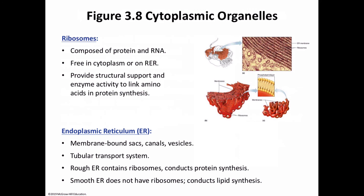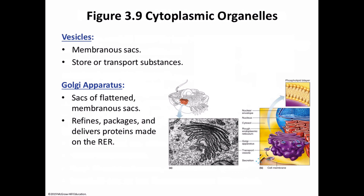The smooth endoplasmic reticulum is especially important and is quite abundant in the liver — this is what happens when you drink alcohol or take drugs. Next is the vesicle. Vesicles are membranous sacs that store or transport substances within a cell or between cells. They contain mostly water when formed and shuttle material between the endoplasmic reticulum and the Golgi apparatus.